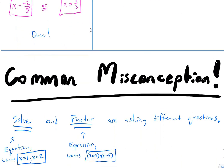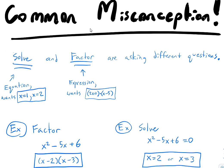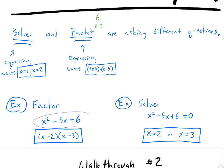A common mistake is mixing up whether the question asks you to solve or factor. Take a sip of water. When it says 'solve,' they're asking for numbers — x equals a number. When it says 'factor,' it just wants you to express something as a product, like 6 is the same as 2 times 3. When we factor a quadratic, we get parentheses times parentheses.